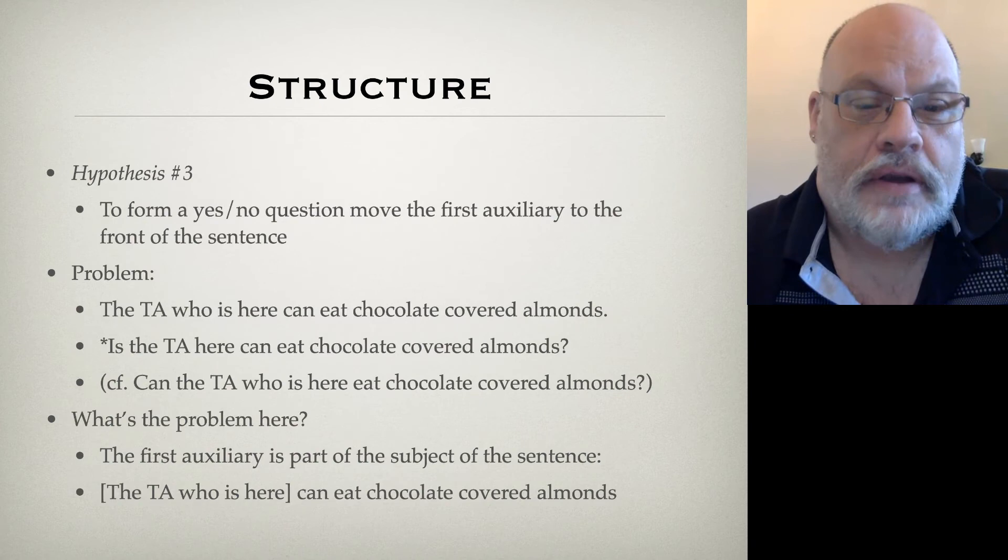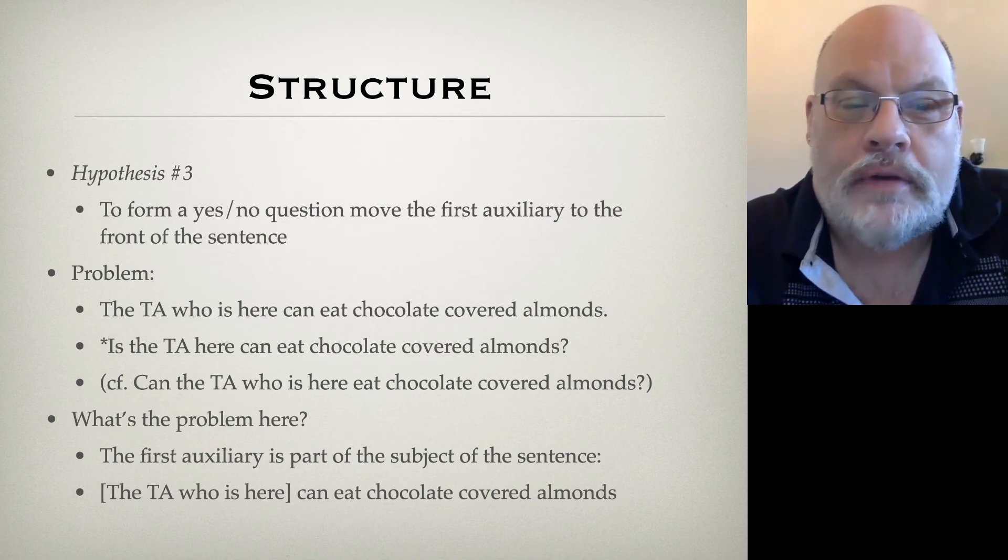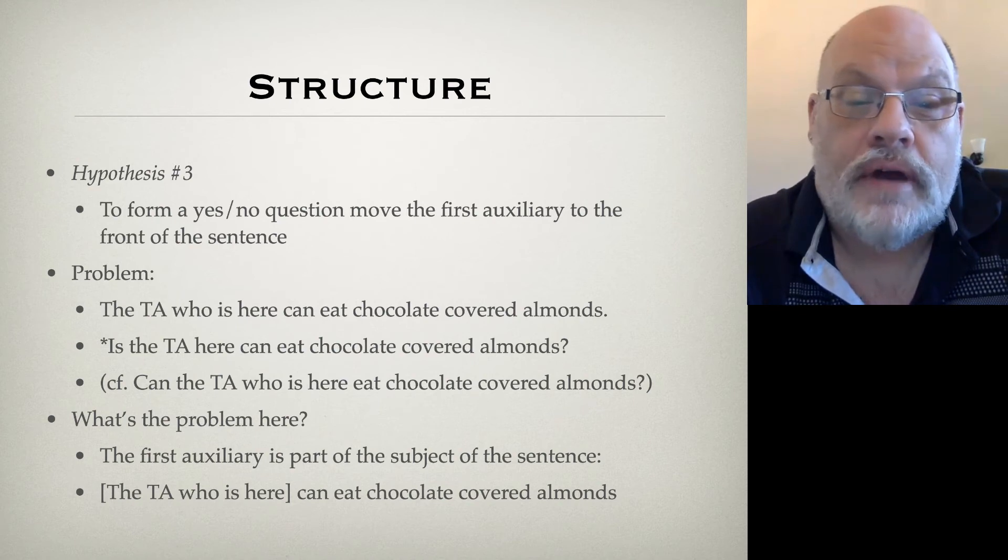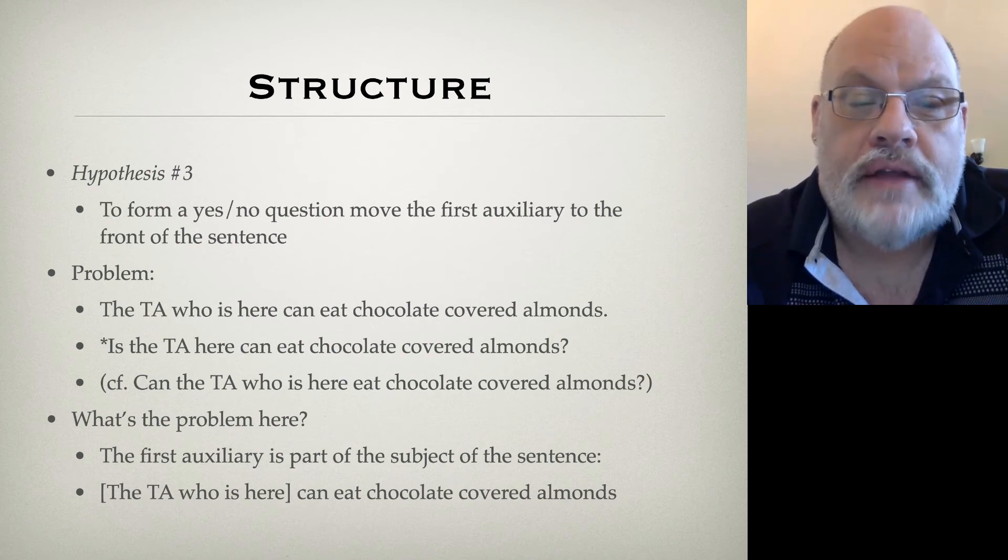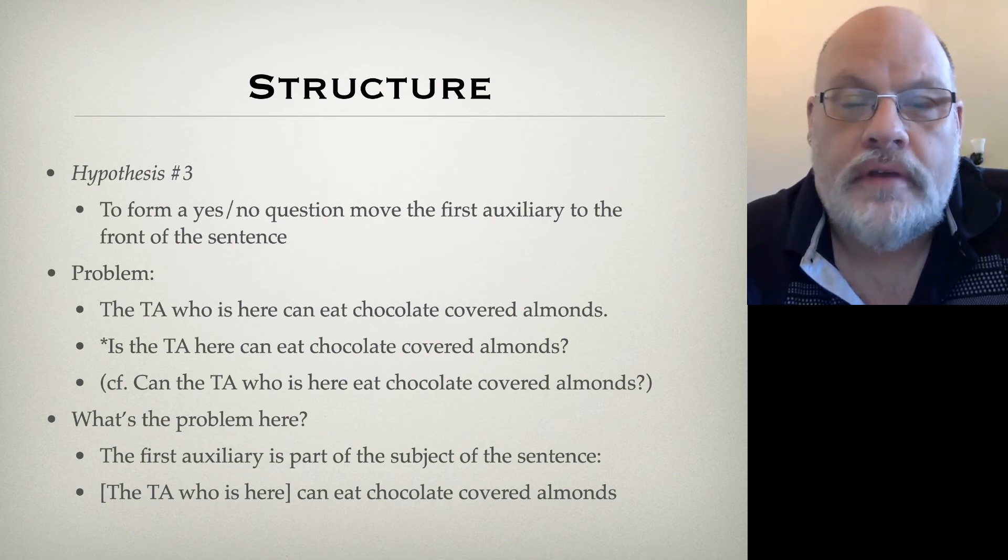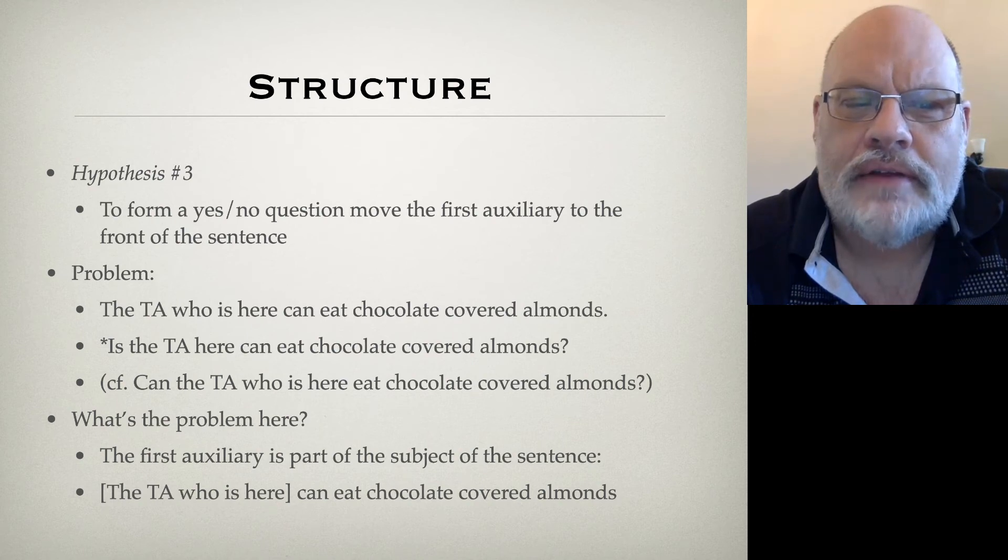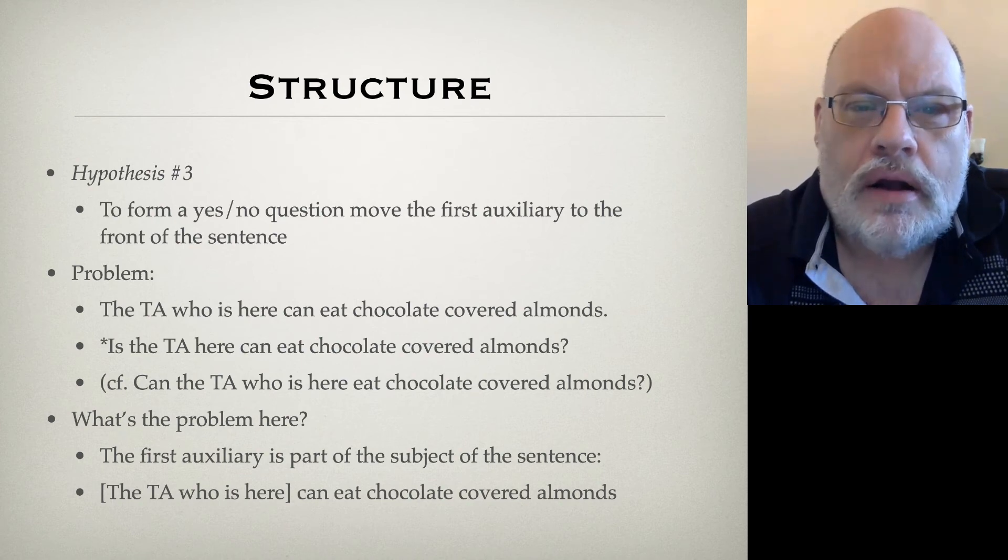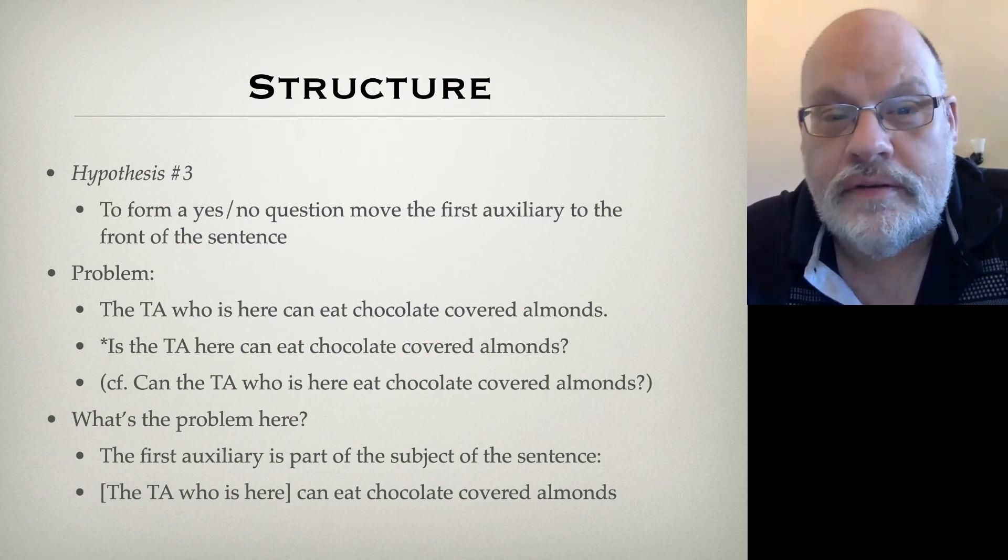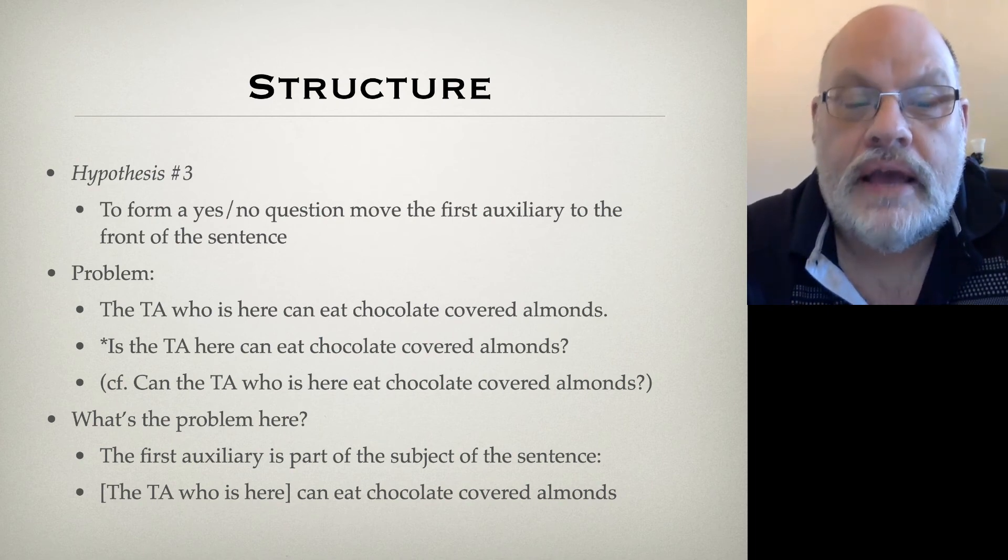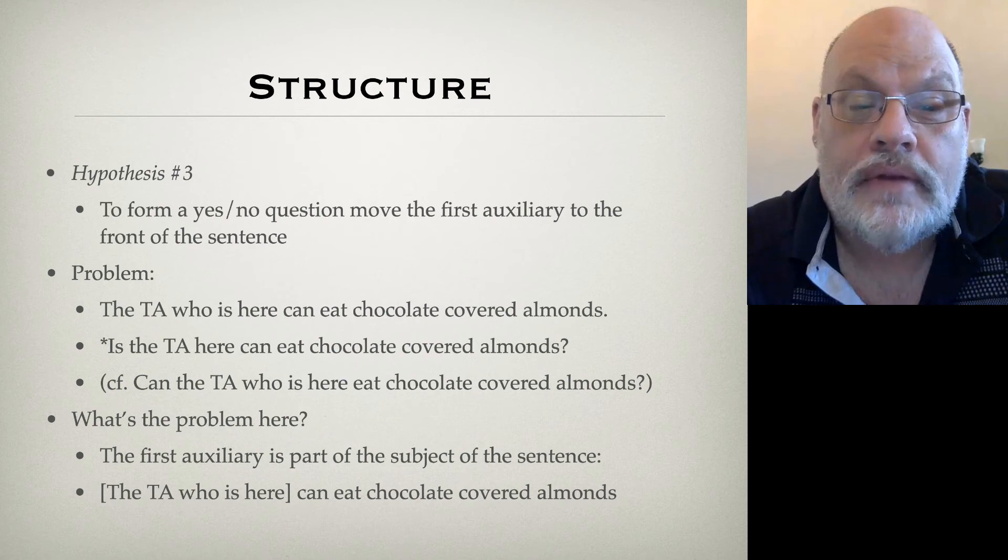Let's see if that works. The TA who is here can eat chocolate-covered almonds. Is the TA here can eat chocolate-covered almonds? That's terrible. Look at that sentence. The TA who is here can eat chocolate-covered almonds. The first auxiliary you run into is 'is'. So you would expect that what you should get is a sentence like the second one, is the TA here can eat chocolate-covered almonds. But that's wrong. In fact, it's the second auxiliary in this sentence that can be inverted. Can the TA who is here eat chocolate-covered almonds? Not the first one.